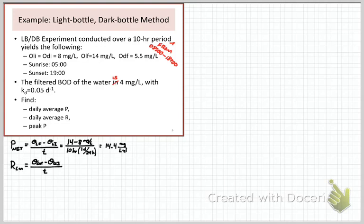And if we look at the dark bottle data, the straightforward calculation that we can make is the community respiration that took place. And I get 6 milligrams per liter. And so those are the most basic measurements that you might make from your observations in the light and the dark bottles.